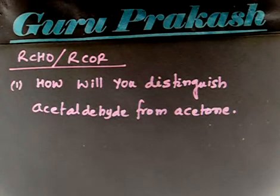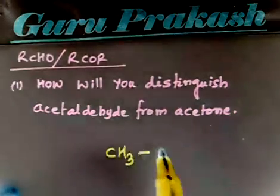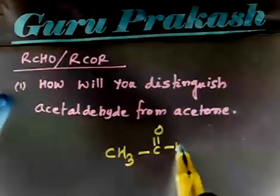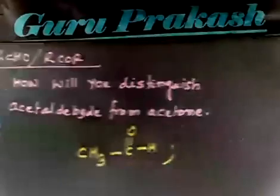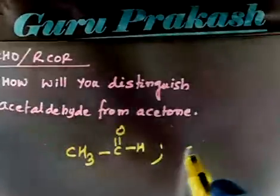How will you distinguish these? Acetaldehyde is CH3CHO. That is acetaldehyde. What is acetone? CH3COCH3 is acetone. So this molecule is acetone.